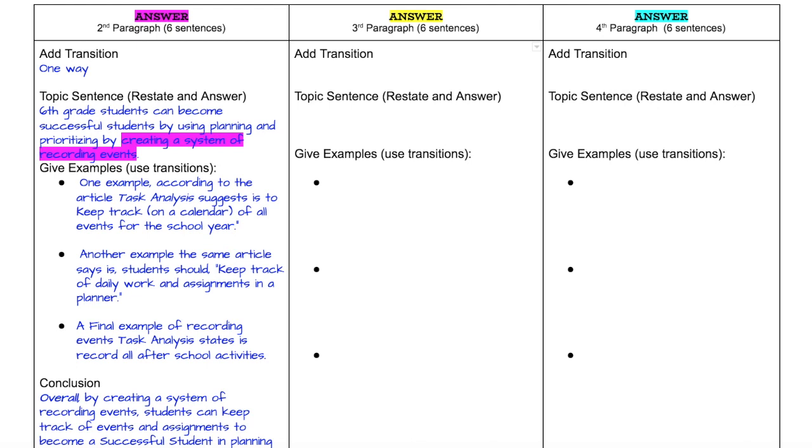Then I get into my topic sentence. I'm restating the same thing that I have in my thesis statement, which now becomes my topic sentence. So I have that pink idea highlighted, and it says sixth grade students can become successful students by using planning and prioritizing by creating a system of recording events.